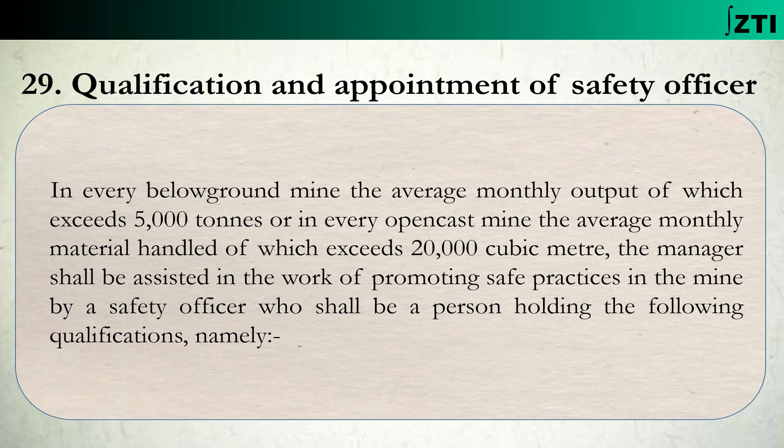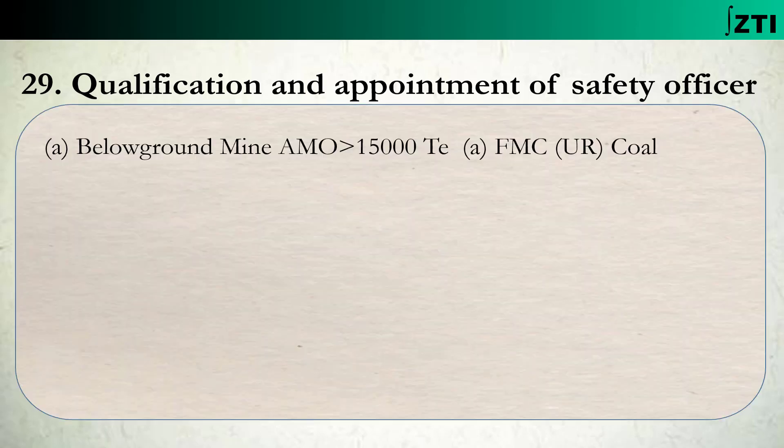Yeh next slide mein dekhte hain. First point: agar underground mine mein, below ground mine mein average monthly output 15,000 ton se zyada hai, toh us mine mein aise person ko hi safety officer appoint kiya ja sakta hai jiske paas first class manager certificate ho coal mein, aur woh bhi not restricted to open cast only hona chahiye. Yani agar uske paas restricted certificate hoga aur mine ka average monthly output 15,000 ton se zyada hai, toh woh wahan safety officer appoint nahi kiya ja sakta.